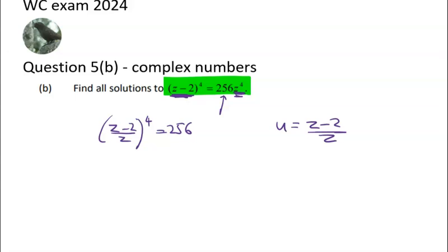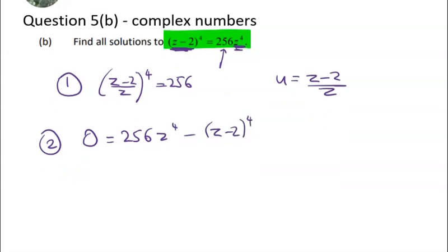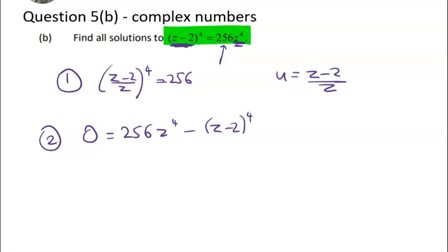And then the second way that I noticed is that I can use the difference of two squares in here. So that's method one and then method two is to say well we've got, doesn't matter which way you go, I'm just going to do what I did in my notes. So we've got 0 is equal to 256z to the power of 4 minus (z-2) to the power of 4. And making an equation equal to 0 is often a good place to start if you really are just stuck and can't see where to start.